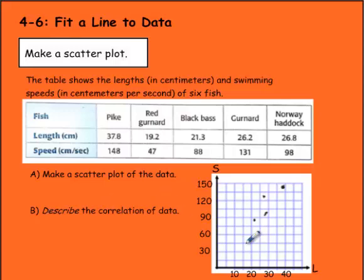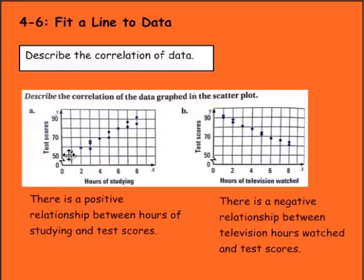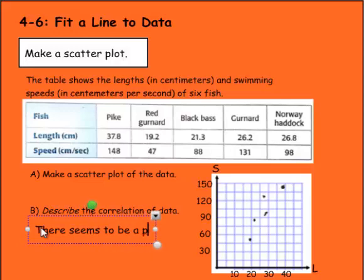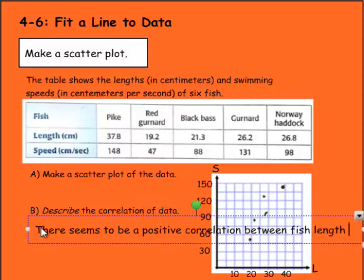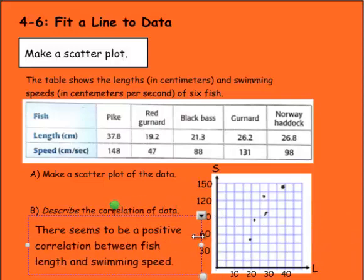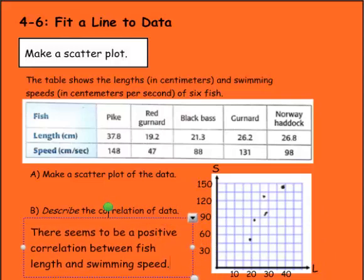Now we need to describe the correlation. You can kind of see it's not very strong, not as strong as the ones we saw here where there's a very straight line. This one, it follows a pretty straight line. So we could say there's a positive correlation there, but maybe not quite as strong. So we'd say there seems to be a positive correlation between fish length and swimming speed. We're not going to say it's a very strong one, just that there appears to be a positive correlation between these two factors.